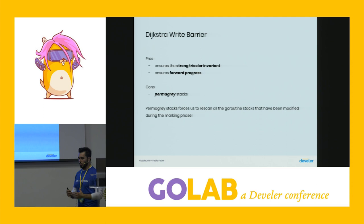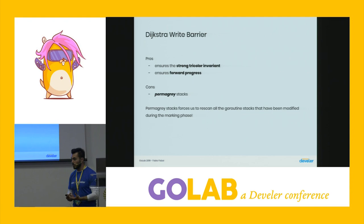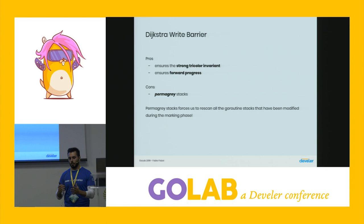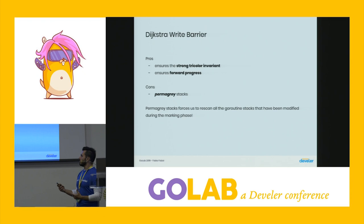This barrier ensures the tricolor invariant and forward progress by helping mark objects toward the end of marking. However, it has a noticeable downside: heap-allocated object addresses stored on goroutine stacks also need protection. Since Go applications can have many goroutines and stacks, adding a stack write barrier is too costly. Therefore, in Go up to version 1.7, goroutine stacks use 'permagray' stacks — you can concurrently scan the stacks, but at the end of the marking phase, if a stack has changed and is unprotected by a barrier, you must rescan all stacks.